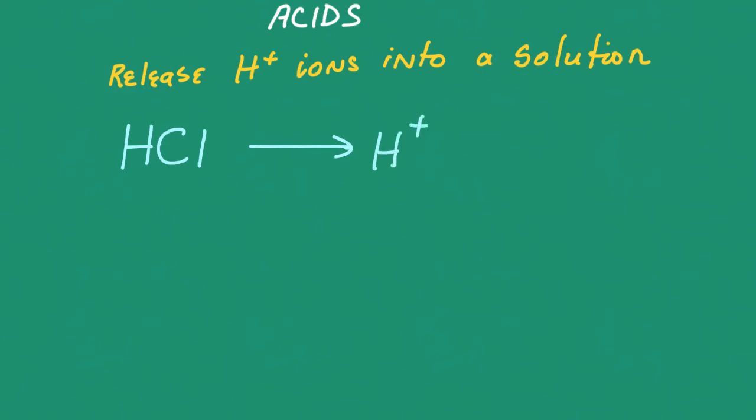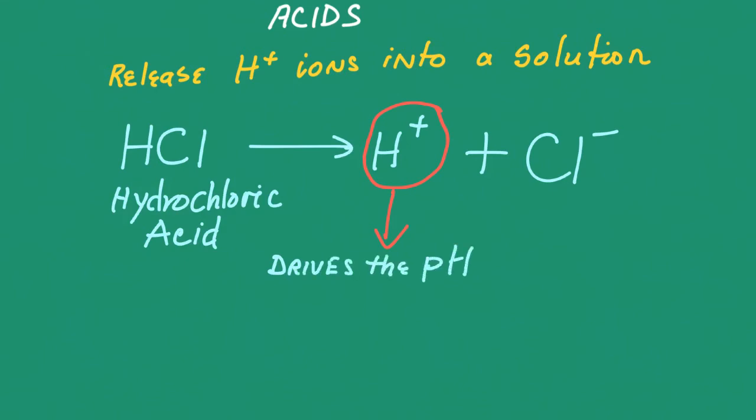Let's take a look at what makes a solution an acid. An acid is a solution that releases free hydrogen ions into the solution. A good example would be hydrochloric acid because when it ionizes, it produces free hydrogen ions and chloride ions. The greater the number of hydrogen ions, the greater the acidity of the solution. When the number of hydrogen ions goes up, it drives the pH down. And we know that when the pH is low, the solution is more acidic.